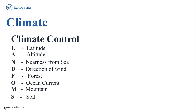Let's start with latitude. Due to the curvature of the earth, the amount of solar energy received varies according to latitude, and as a result the air temperature decreases from the equator towards the poles. When we talk about altitude, as we go from the surface of the earth to higher altitudes, the atmosphere becomes less dense and temperature decreases. That is why hills are cooler during the summer.